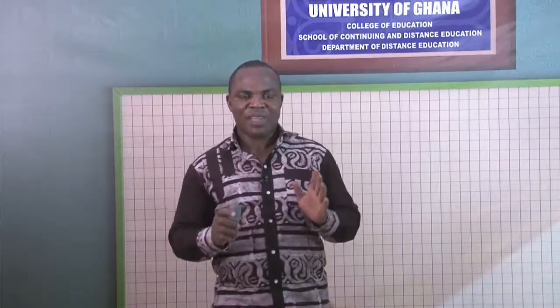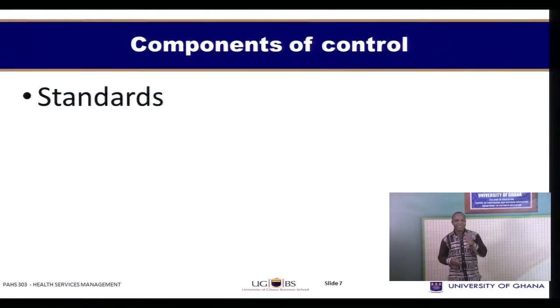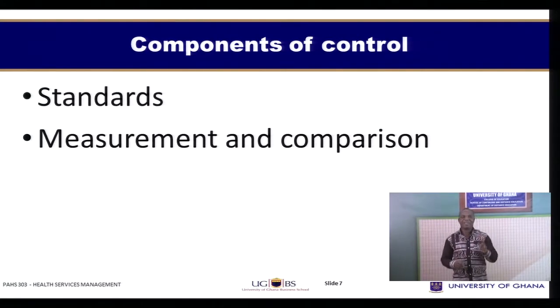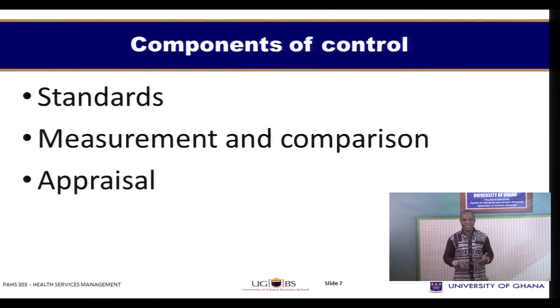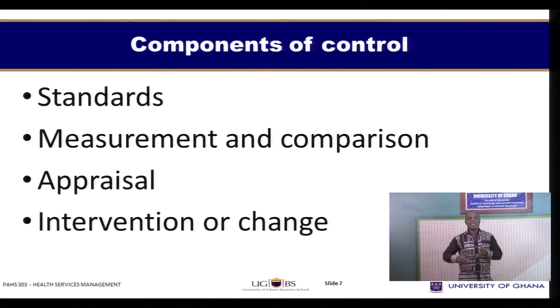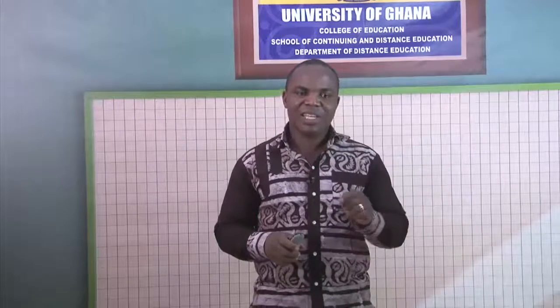The second topic has to do with the components of the control process. For every control process to be effective, there are certain generic components that must be associated with it. First, there must be standards — what we ought to achieve. There must be measurement and comparison, the process whereby we compare work outputs with work standards. There must be a process of appraisal, which has to do with the assessment or evaluation between the outcome and the standard. And there must be an intervention or change, which takes place where there is a difference between the standard and the result.